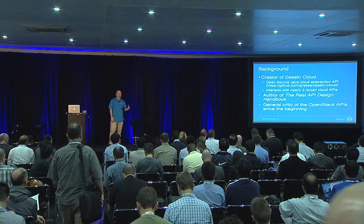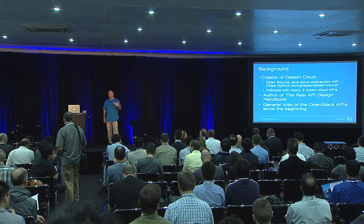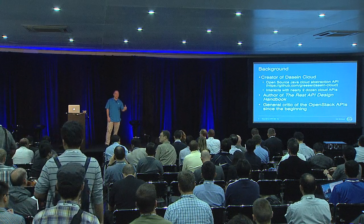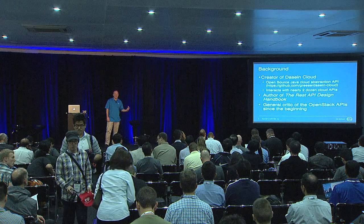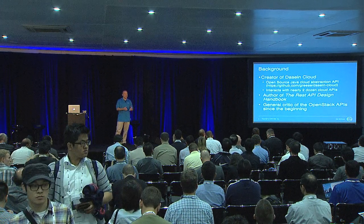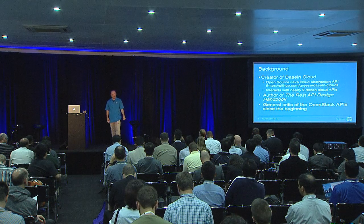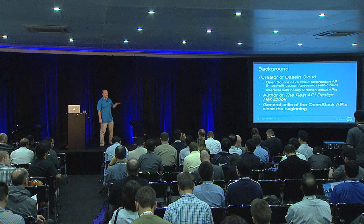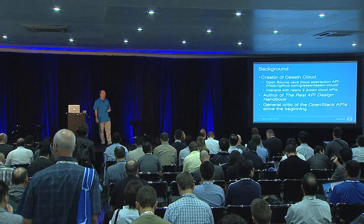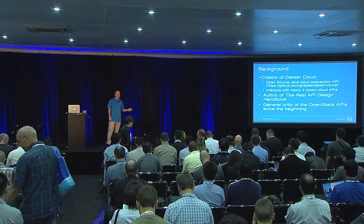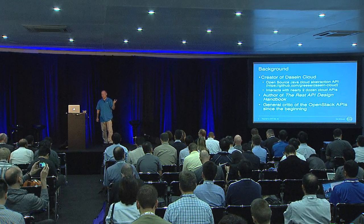My background: I was the former CTO of Instratius, which was acquired by Dell about six months ago. In my role over the last six years building out Instratius, I built out the open source Java cloud abstraction API, Dasein Cloud, which provides a single Java interface that talks to all the different clouds out there, with support for about two dozen different clouds. So in terms of working with cloud APIs, whether they're RESTful, SOAP, or pretend to be RESTful, I've done a lot of it.